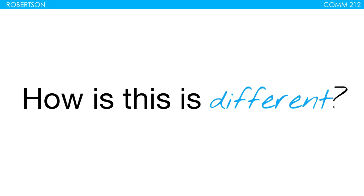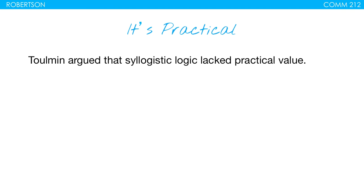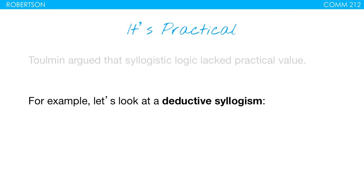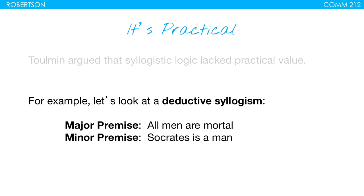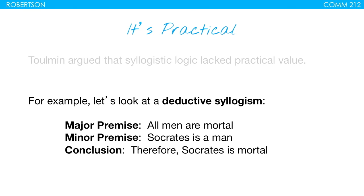So how is this different from what came before? This model was published in the late 1950s, gained popularity in the 60s, and we still talk about it today. Toulmin argued that syllogistic logic lacked practical value. For example, a deductive syllogism: major premise — all men are mortal; minor premise — Socrates is a man; therefore, Socrates is mortal. That's a deductive syllogism. What Toulmin was saying is that this makes logical sense, yes, but people don't really talk like this and don't really formulate arguments this way in the real world. The idea was to create something more useful and more practical in the way that people actually experience, use, and understand arguments.